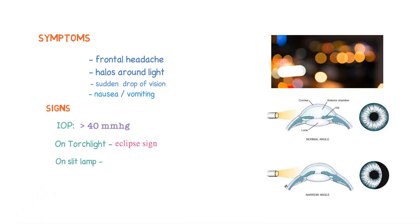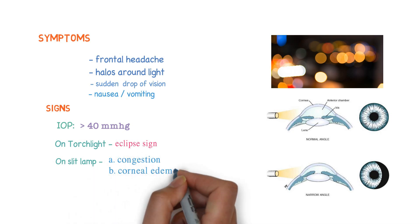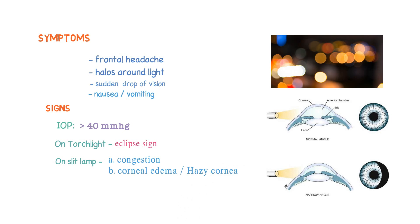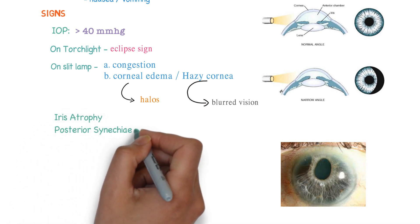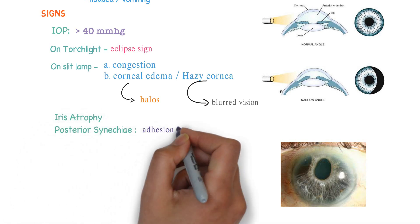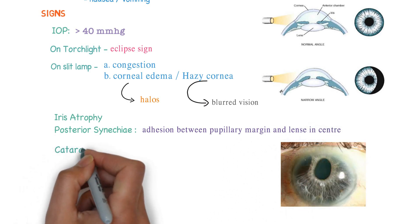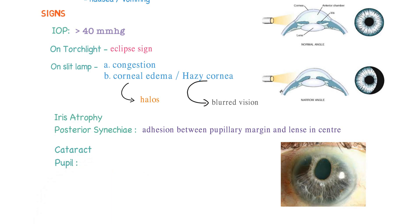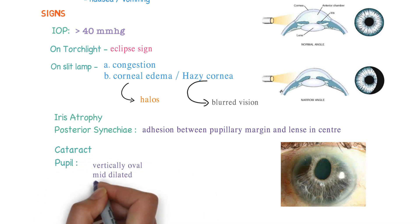On slit lamp one can see congestion, corneal edema, or hazy cornea. Due to corneal edema there may be halos around light, and if there is a hazy cornea one can have blurred vision. There may be iris atrophy, and there may be posterior synechiae — adhesions between the pupillary margin and lens centrally. One can also develop cataract. The pupils are vertically oval, mildly dilated, and fixed.